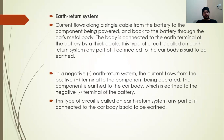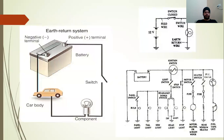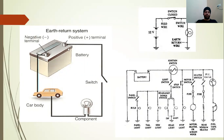Next topic is the earth return system. In this system, the battery's negative terminal is attached to the body of the vehicle. The positive terminal connects through a switch to different types of electrical equipment. The positive charge flows to the component, and the return current goes back to the car body, completing the closed circuit. This is the earth return system — every piece of different equipment needs to be connected back to earth.